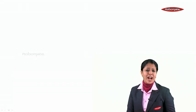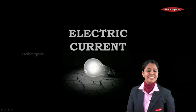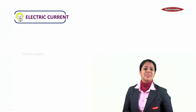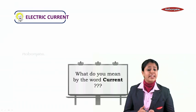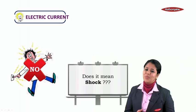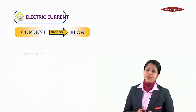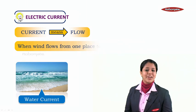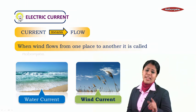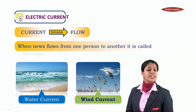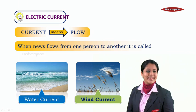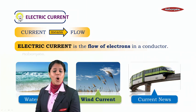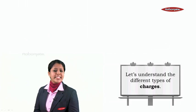Hello students, today we are going to start a new chapter of science: electric current. We cannot imagine our life without electric current. Now, what do we mean by the word 'current'? It doesn't mean shock. Current means flow. When water flows from one place to another, it is called water current; wind flow is called wind current; news flow is called current news. So electric current is the flow of electrons in a conductor.